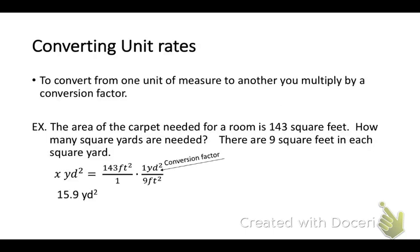Let's review how to convert a unit rate. To convert one unit of measure to another, you want to multiply by a conversion factor. Look at the example. The area of the carpet needed for a room is 193 square feet. How many square yards are needed? In order to figure that out, you need to multiply the square feet by a conversion factor which tells you how many square yards there are in square feet. There is one square yard in nine square feet.